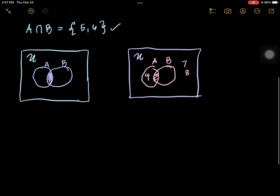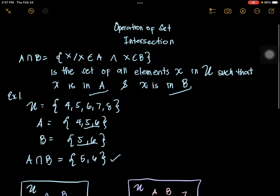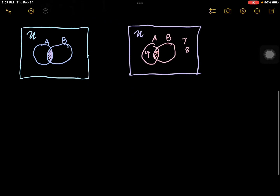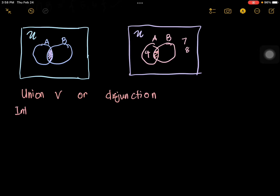Let's elaborate using this symbol. Let's have a little recap. In union, the symbol is read as OR and it's called disjunction. Now, the symbol for intersection in its definition is the conjunction symbol, which is read as AND. This is conjunction.